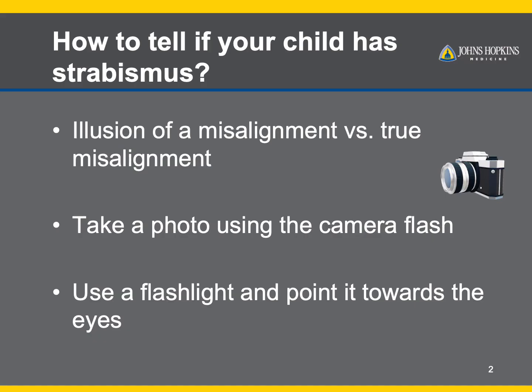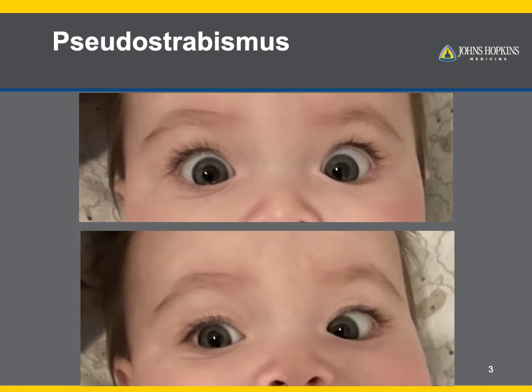It can be very difficult for parents to determine if their child has strabismus. By using a light source pointed in the direction of the child's eyes, it can help determine whether there is a true problem. Notice the symmetric location of the light reflection here in this child at about 9:30 to 10 o'clock. Although one or both of the eyes may appear crossed, this is just an illusion that is common in young children when the skull has not fully developed. The nasal bridge is wider in this age group.